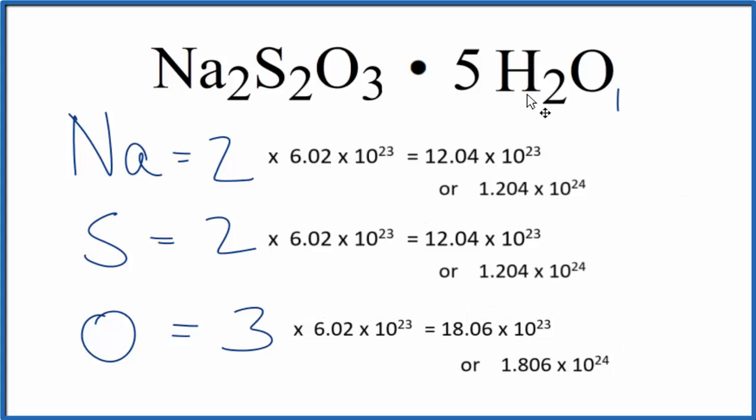If you were asked to figure out the number of hydrogen atoms, you would multiply the number of hydrogen atoms, which is ten, times Avogadro's number. Or for oxygens we have one times five, we have five oxygens, multiply that by Avogadro's number. This is Dr. B, the number of atoms in Na2S2O3 pentahydrate. Thanks for watching.